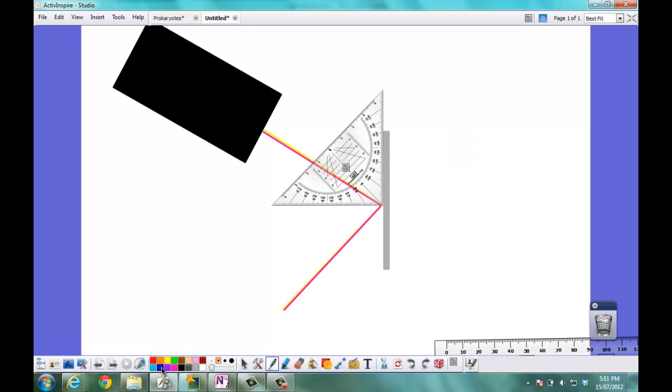I now need to draw the normal to the mirror so I've pulled out a set square. I have my set square lined up exactly against the edge of the mirror and then I'm going to draw the normal at 90 degrees to the surface of the mirror.